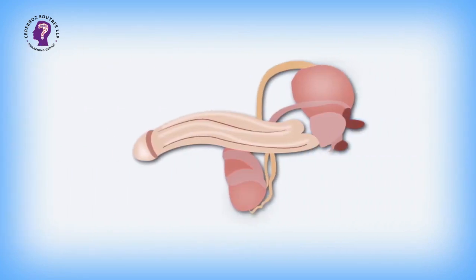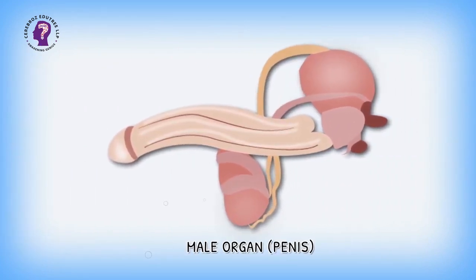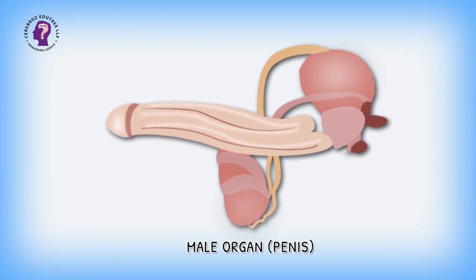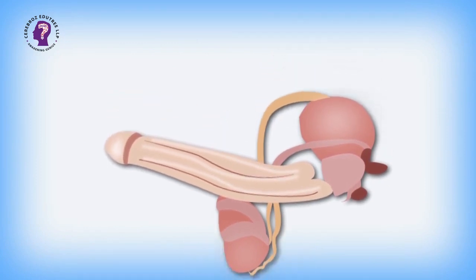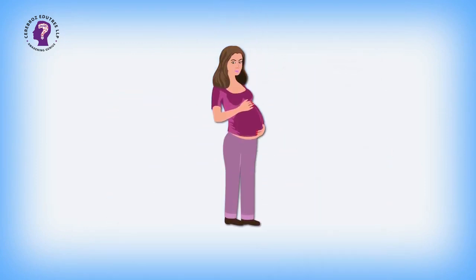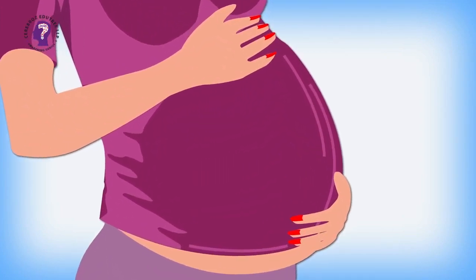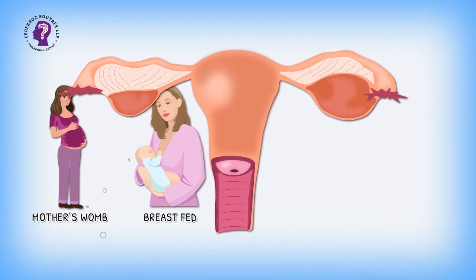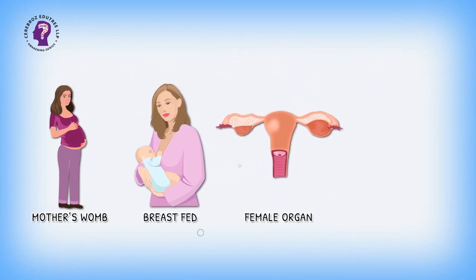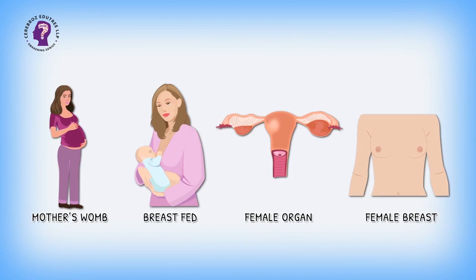Actual transfer of germ cells needs special organs for sexual act, such as penis, when it is capable of becoming erect. In mammals like humans, baby is carried in mother's womb for a long time and later breastfed, so the female reproductive organs and breast have to develop accordingly to accommodate this possibility.